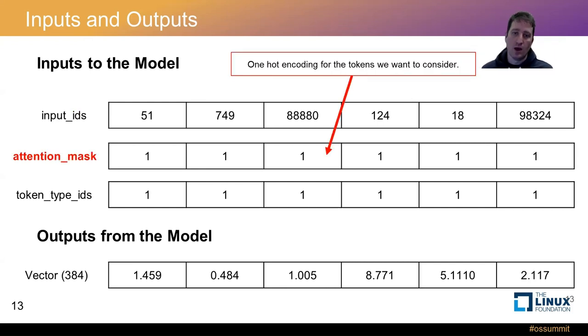The attention mask, one hot encoding for the tokens we want to consider. Since we are creating a vector for sentences, we want to consider every token in the sentence. In some cases, you may not. You would put zero in that part of the array for where you don't want to consider the tokens. Or for a different NLP task, there may be tokens that you don't want to consider. But for this example, we want to consider all. So we are using each one.